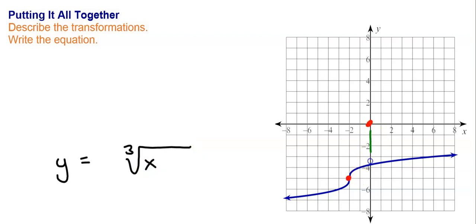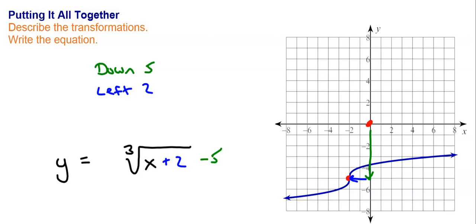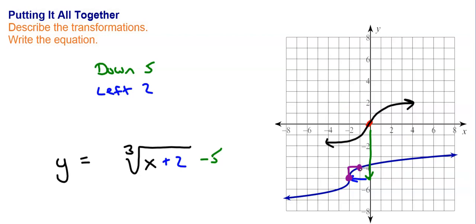Now we look at all the transformations. To go from the origin to this point, I have to go down 5. Up and down is on the outside, so I put a minus 5 on the outside. I go left 2, so that's on the inside, and left 2 is a plus 2 because it's the opposite of what you think. Is it inverted? No — if it was inverted it would be decreasing. Did the size change? Going from the inflection point, up 1 over 1, I'm still on the graph, so the size did not change.